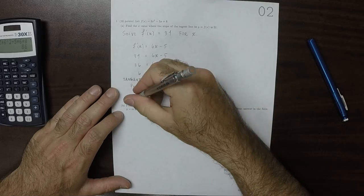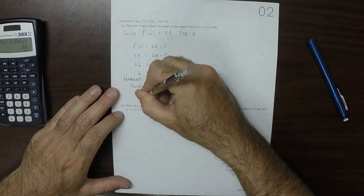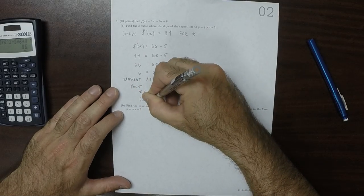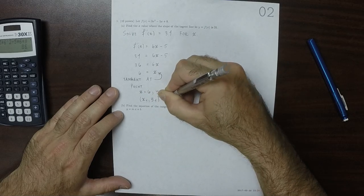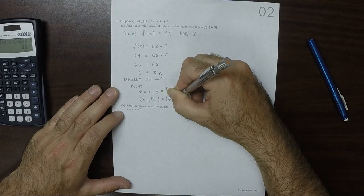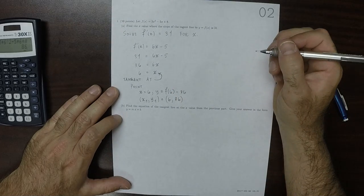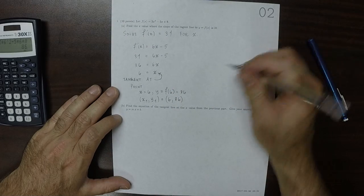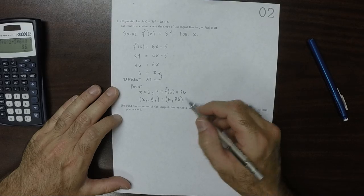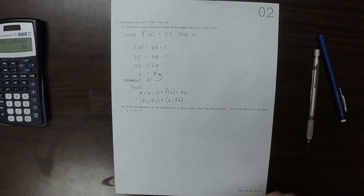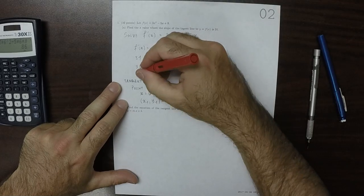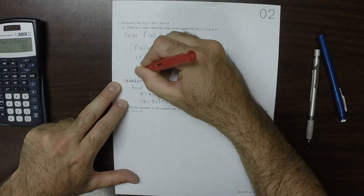As a result, the point x1, y1 is 6, 86. So this is the answer to part a.